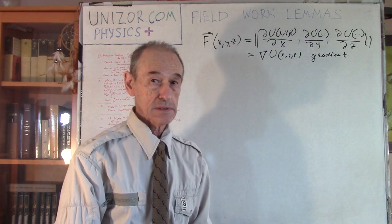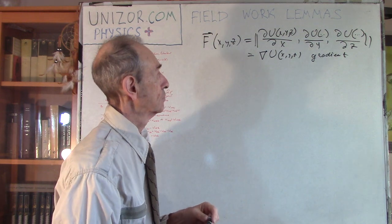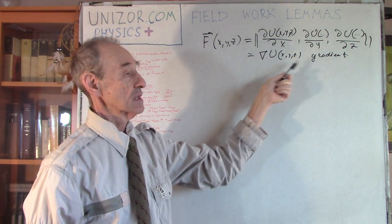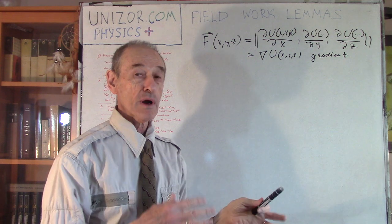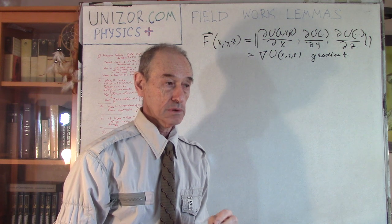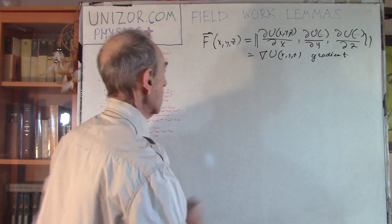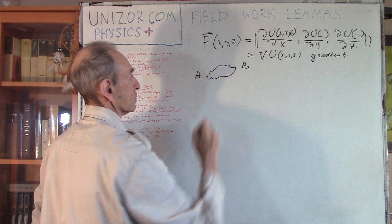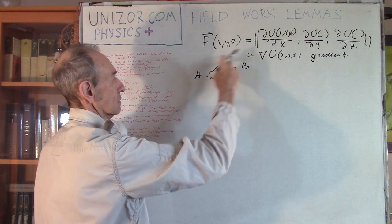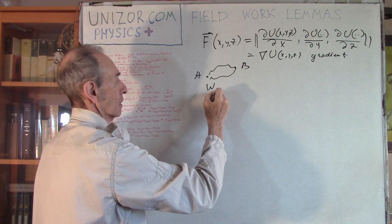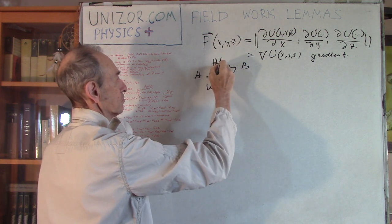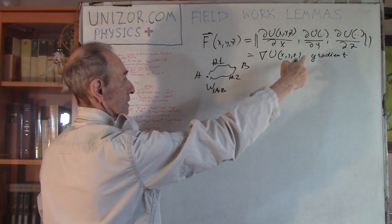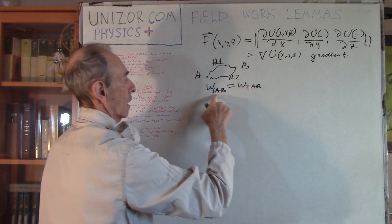That was basically covered in the last lecture. I also proved that if the intensity force is defined as the gradient of some potential function, then there are a couple of important properties. If you have two different points and two different trajectories, as an object moves from A to B along trajectory one or trajectory two, the work performed by this force does not depend on the path.